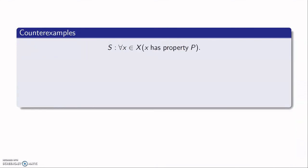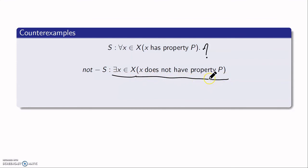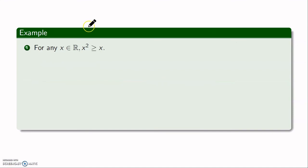Next, counterexamples in mathematics. Suppose I have a statement of the form 'for all x in X, x has property P', and I want to show the statement is false. Its negation states: there exists at least one point x in X such that x does not have property P. So to disprove such a statement, I need to find just one point that does not satisfy property P. Let me demonstrate with an example.